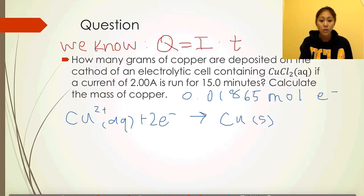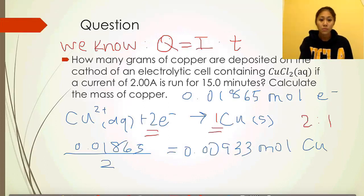With 0.01865 moles of electrons, we then write the half-reaction equation of copper. From this one, we can see that the moles of electrons versus the product of copper solids produced is 2 to 1. Because of the molar ratios, we can easily calculate the amount of products that will be formed, and we divide the 0.01865 by 2.